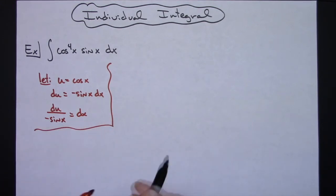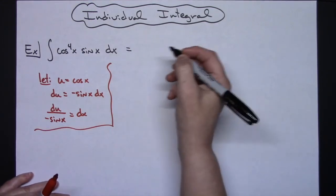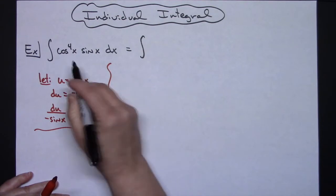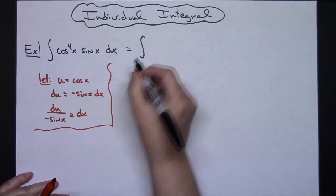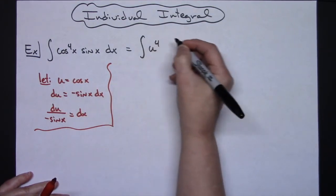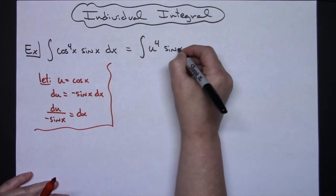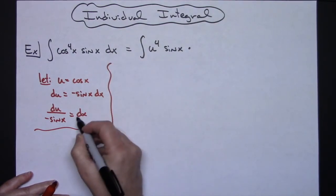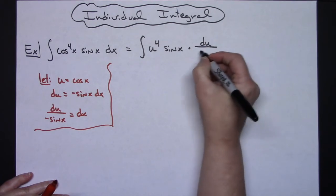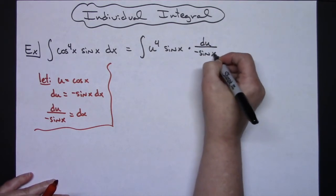After we do that then we'll come back up to that original equation and we'll do some substitutions. So we'll have the integral. Replacing cosine with u we'll have a u to the fourth and then the sine x and then replacing that dx with what it equals we'll have a du over a negative sine x.